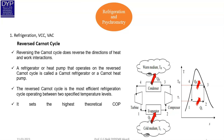Looking at the general refrigeration cycle diagram: from the lower temperature limit TL, heat is supplied to the evaporator. The refrigerant in vapor state from the evaporator is then supplied to the compressor, which produces a high-pressure refrigerant vapor.